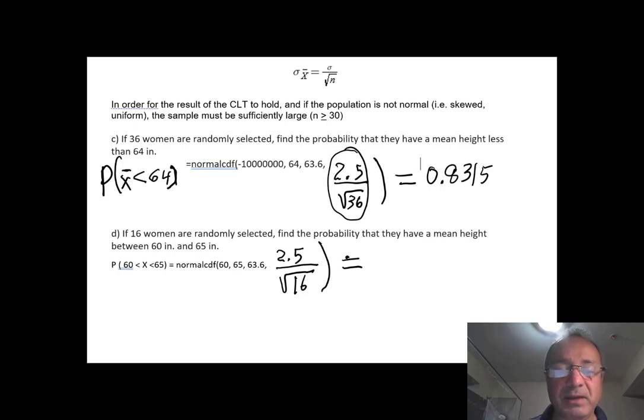Okay, next question. If 16 women are randomly selected, find the probability that they have a mean height between 60 and 65 inches. So we need the mean height, so this should be X bar here, right here. So probability of X bar between 60 and 65, which is normal CDF. Lower bound is 60, upper bound is 65, mean is 63.6. But look at the standard deviation. It's 2.5 divided by the square root of the sample size, which is 16.